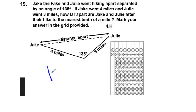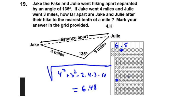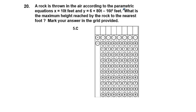For Problem 19, compute four squared plus three squared minus two times four times three times cosine of 135 degrees, which gives approximately 6.48. Rounded to the nearest tenth, this is 6.5. For Problem 20, tracing the graph gives a maximum height of 106 feet.